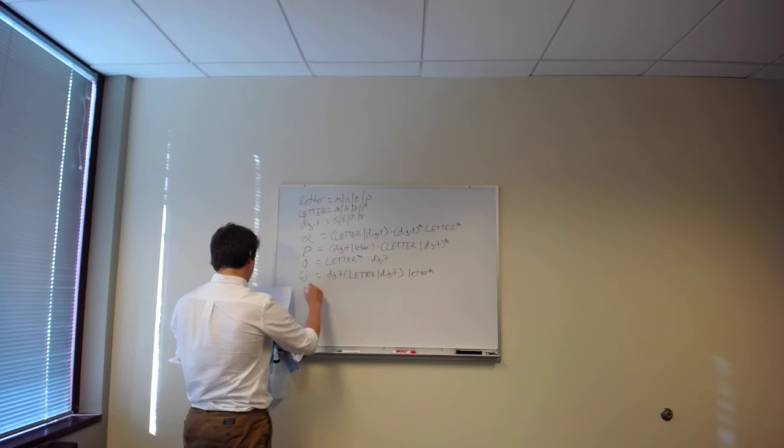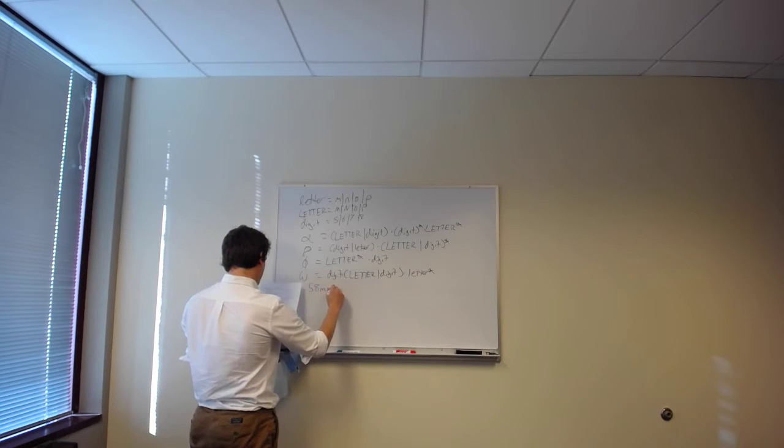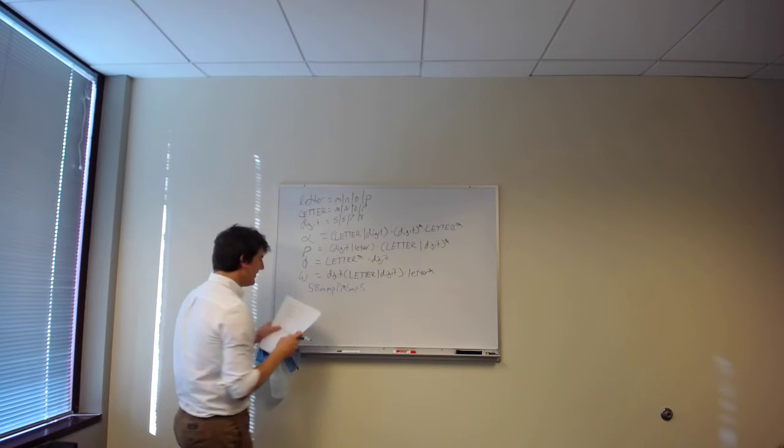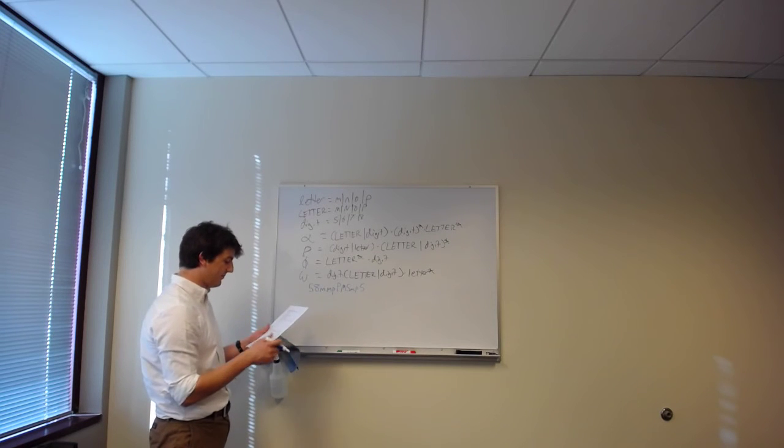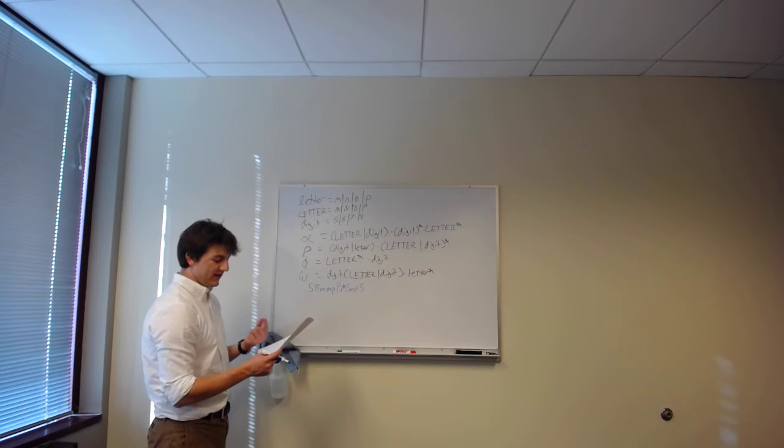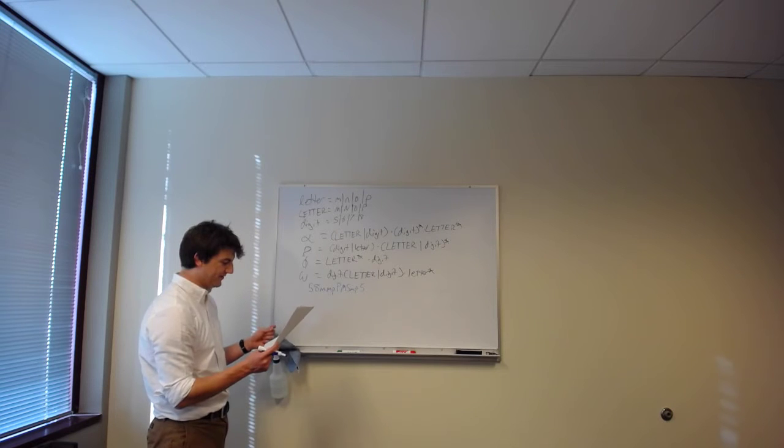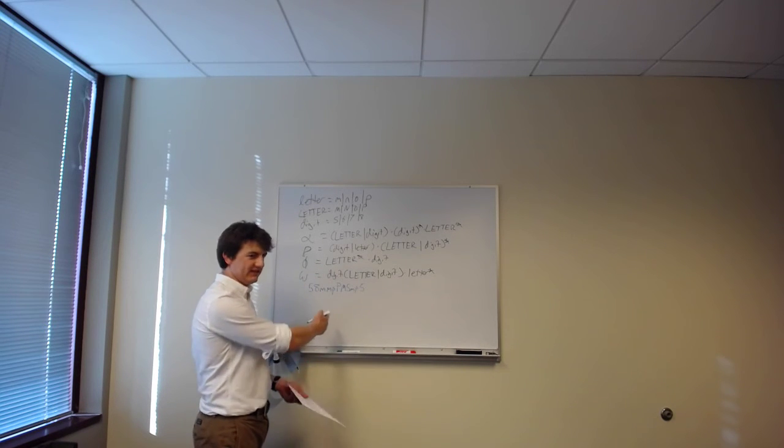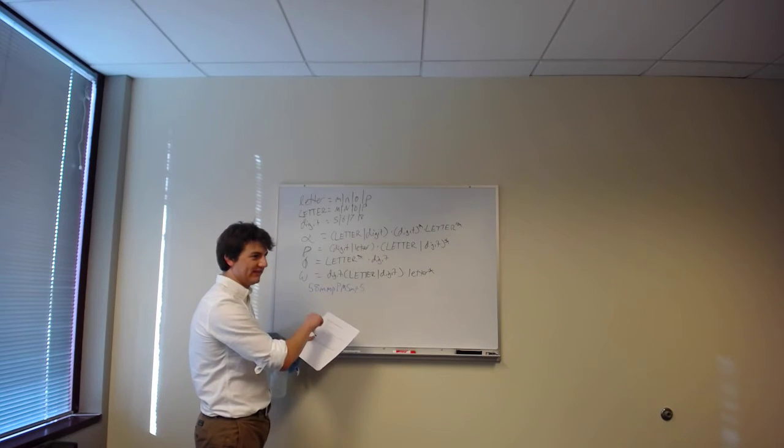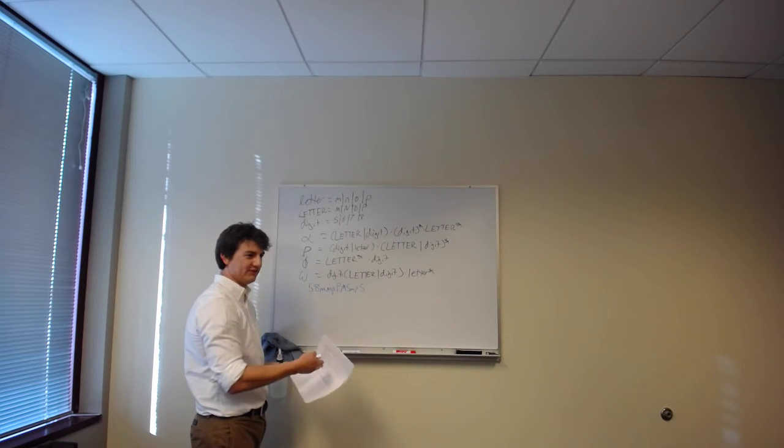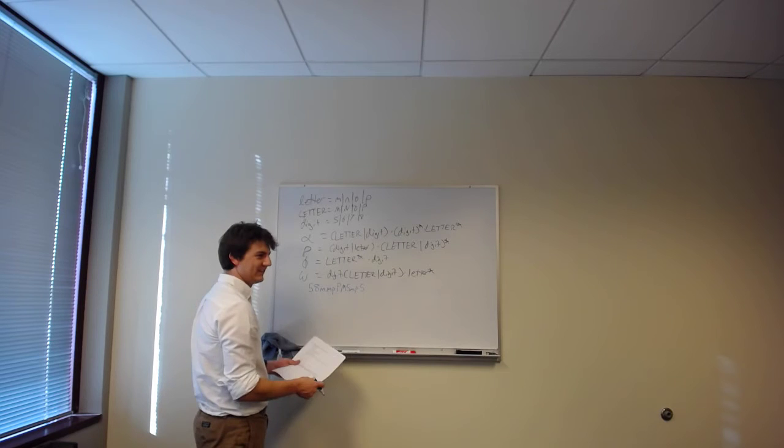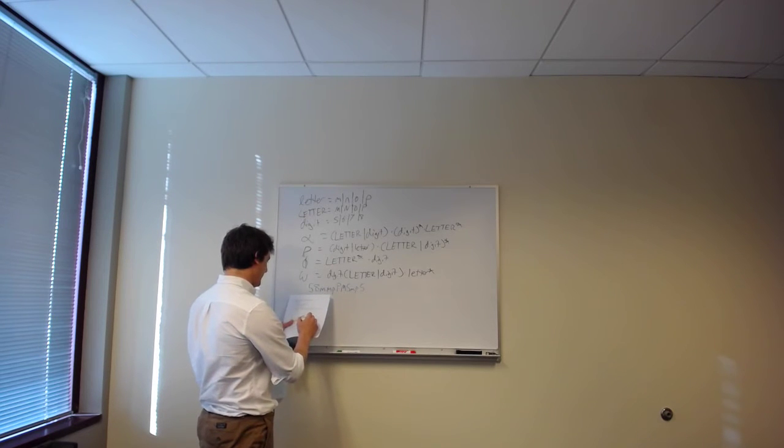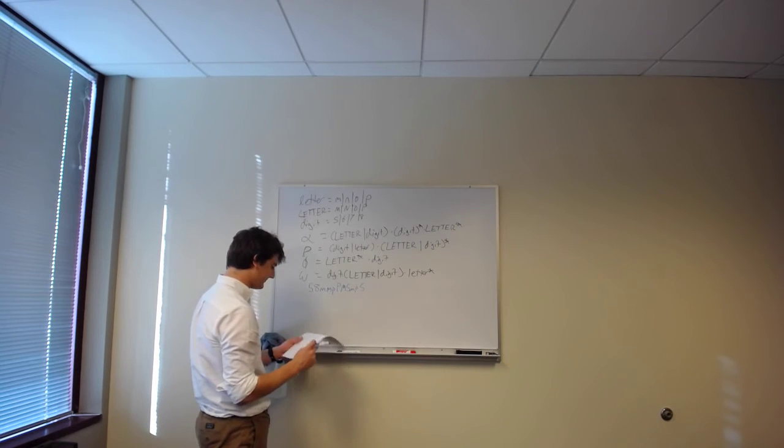So the question is, if we call get token repeatedly on this input until the end of input is reached, the sequence of tokens returned is the following. It tells us specifically assume longest prefix matching is used and ties are broken in favor of tokens that appear first in the list. So we have one thing we want to do before we start. If we ever copy the input into somewhere else, we want to make sure and verify it's actually the same input. It would suck to solve this problem on a different string and put the wrong values in here. 5, 8, M, M, P, capital P, capital M, 5, M, P, 5.